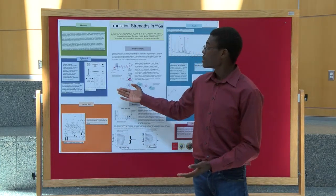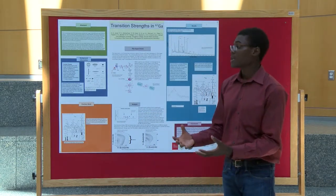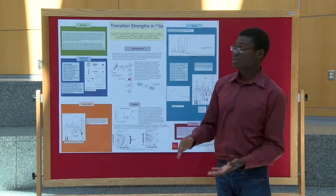When you increase the deformation, you can either have prolate, which is like an American football, or oblate, which is like a Frisbee.